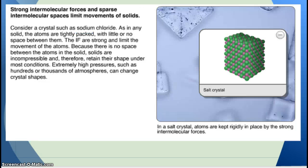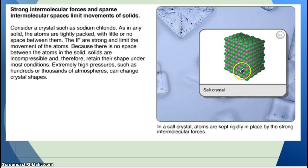Strong intermolecular forces and little intermolecular space limit the movement of solids. Consider a crystal such as sodium chloride: the atoms are packed tightly with no or little space between them and the intermolecular forces are strong, limiting the movement of the atoms. Because there is no space between the atoms in solids, solids are incompressible — you can't squeeze them together — and therefore retain their shape under most conditions. Extremely high pressures, such as hundreds or thousands of atmospheres, can change crystal shapes.